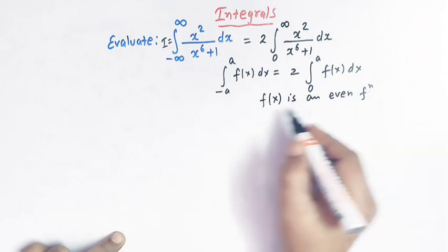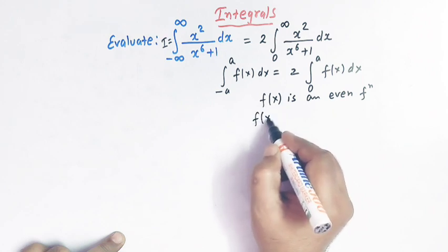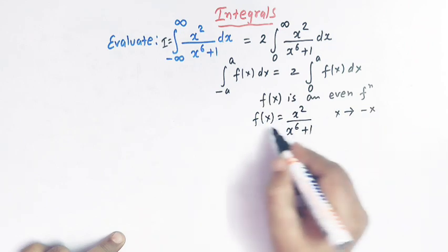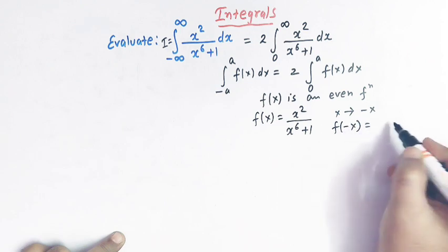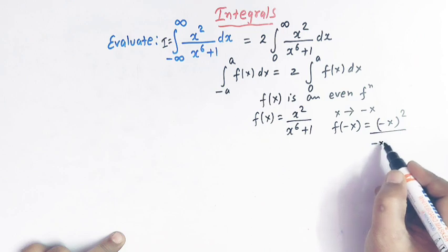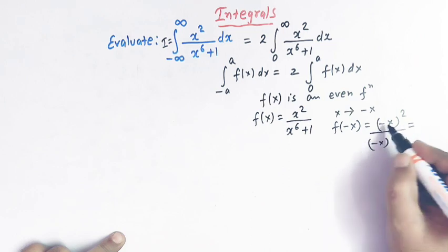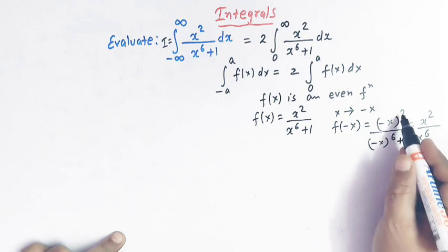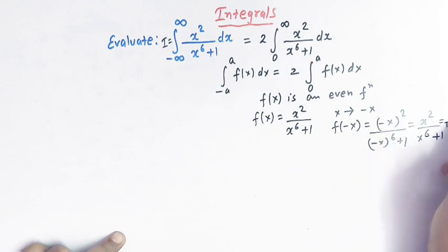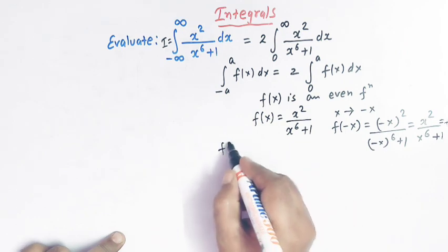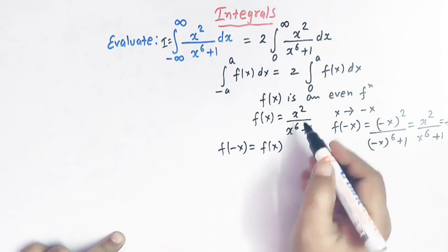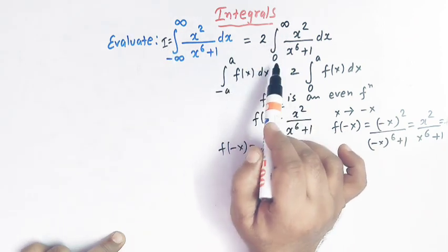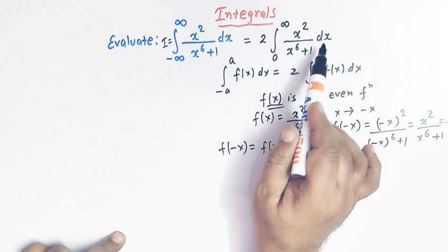Here f(x) is x squared divided by x raised to 6 plus 1. If we replace x by minus x, then f(minus x) equals minus x squared divided by minus x raised to 6 plus 1. Since minus x squared is simply x squared and minus x raised to 6 is x raised to 6 (because we have even powers), this equals f(x). So f(minus x) equals f(x), confirming f(x) is an even function. Therefore, integral I can be written as 2 times the integral from 0 to infinity of x squared over x raised to 6 plus 1 dx.